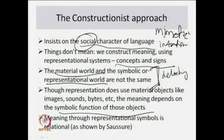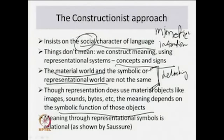Though representation does use material objects — like images, sounds, bytes — the meaning depends on the symbolic function of those objects. It is true that through sounds and images the message is conveyed, so images, sounds, and bytes are the carriers. But the meaning depends not on the images, sounds, or bytes per se — the meaning depends on the symbolic function of those objects. As Hall suggests, meaning through representation symbols is relational — meaning is relational, as we discussed in our lecture on structuralism, where language is seen as a system of differences, a system of relations, a system of arbitrary signs.